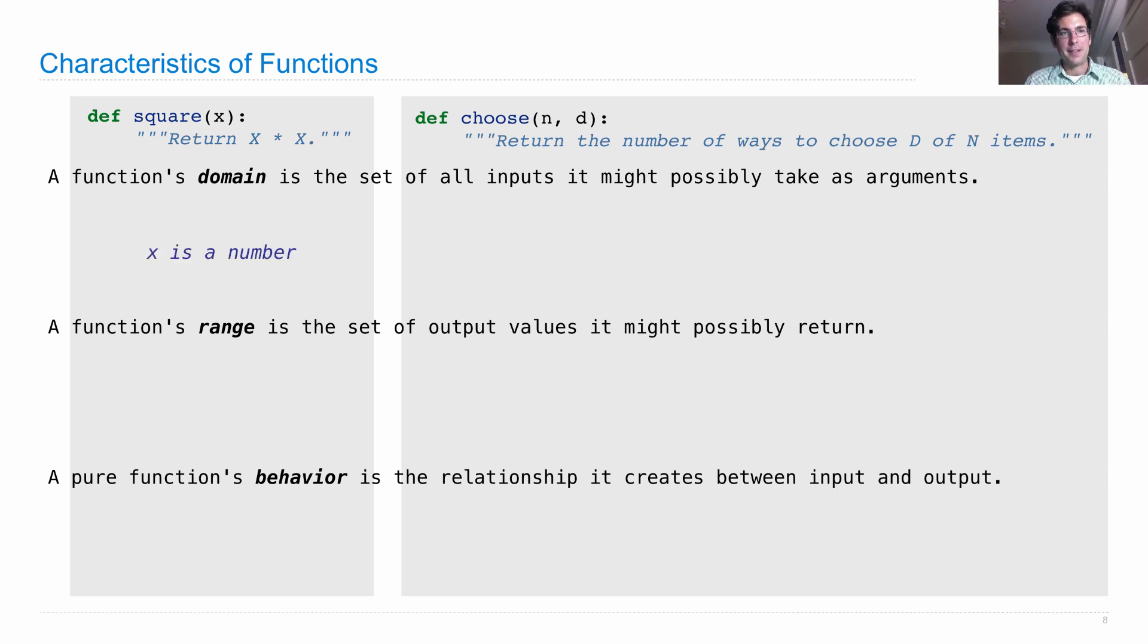The domain of square is that x just has to be any number, a real number. Whereas the domain of choose is much more restrictive. n and d are meant to be positive integers, and n is greater than or equal to d. Otherwise, you can't choose d out of n items.